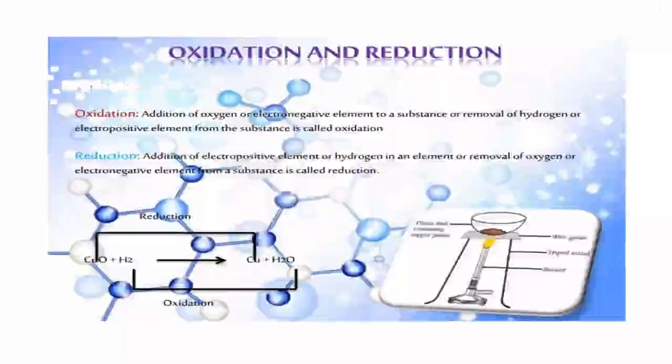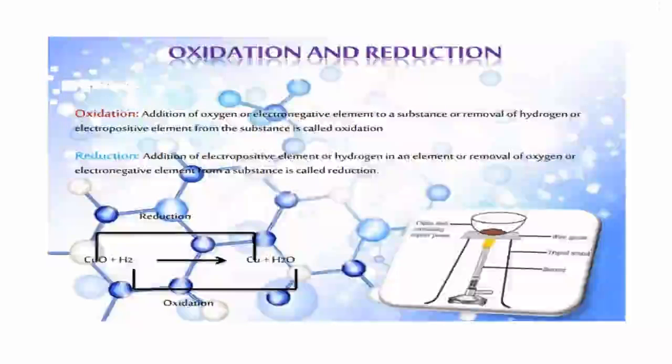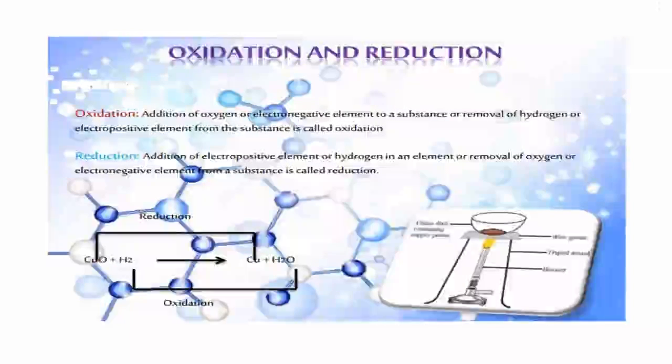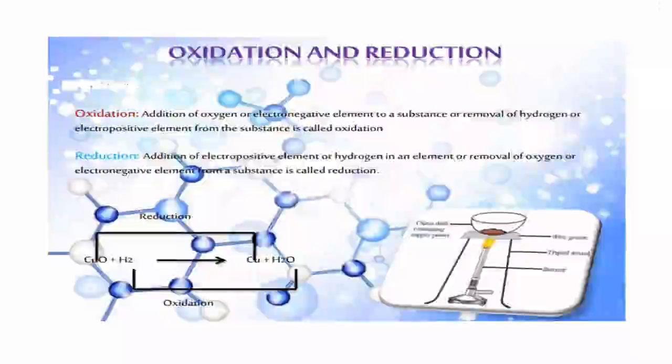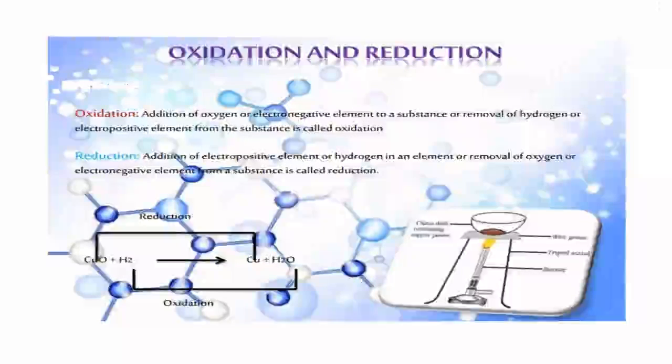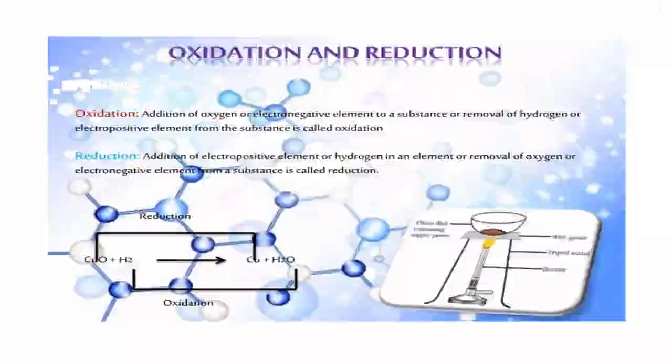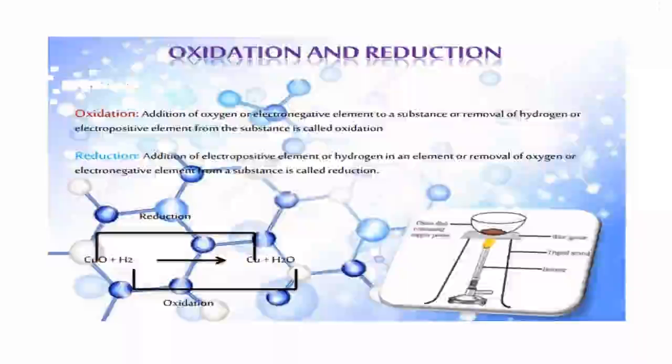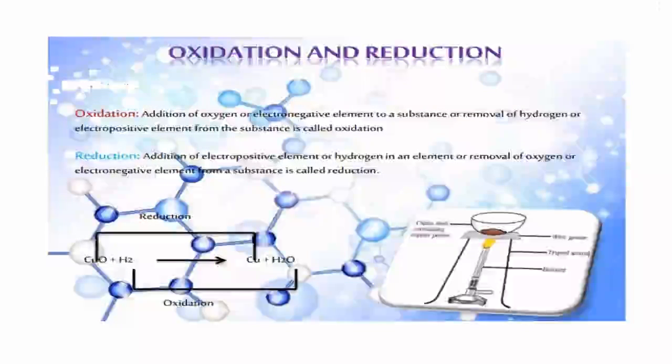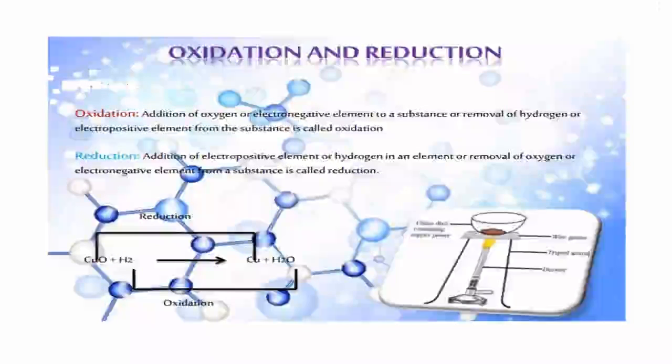Oxidation and reduction. Oxidation: addition of oxygen or electronegative element to a substance, or removal of hydrogen or electropositive elements from the substance is called oxidation. Reduction: addition of electropositive elements or hydrogen in the element, or removal of oxygen or electronegative elements from the substance is called reduction. Oxidation is addition of oxygen while reduction is removal of oxygen. Example: CuO + H2 gives Cu + H2O. CuO is reduced to Cu and H2 is oxidized to H2O.